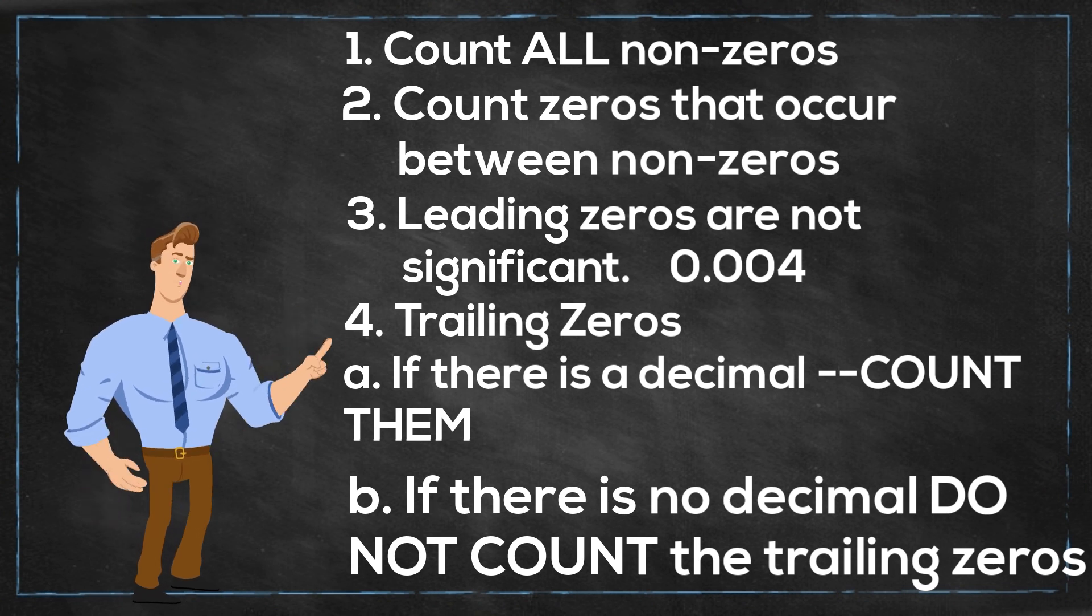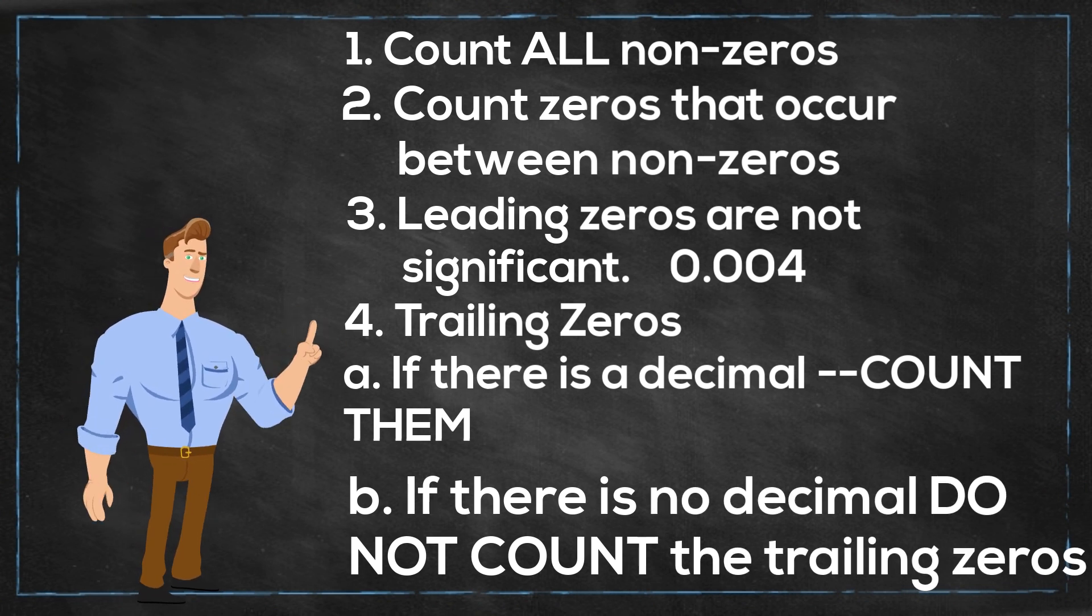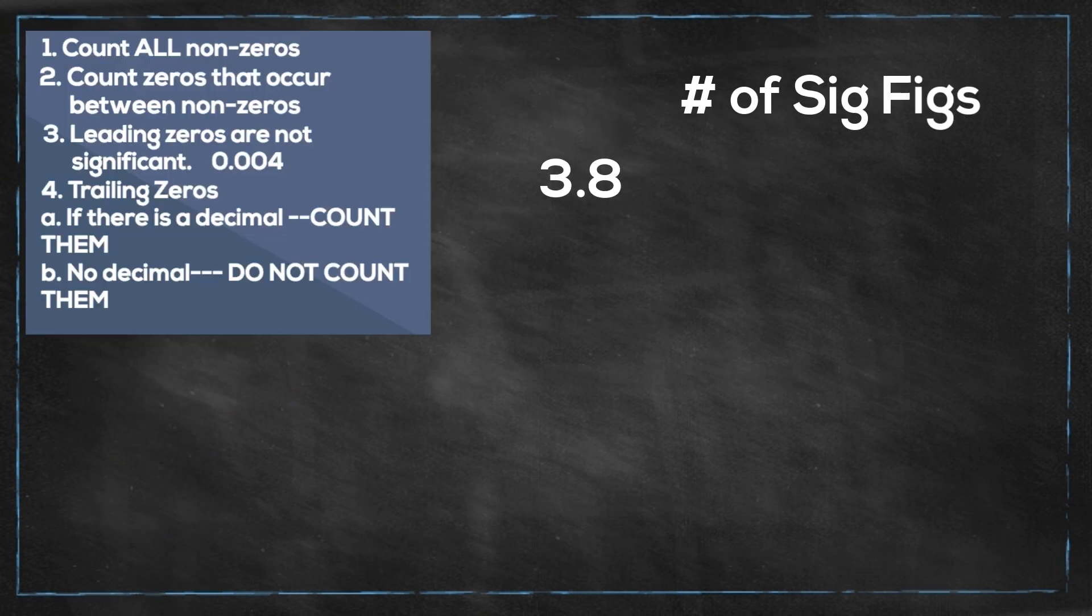Okay, so now let's look at a couple examples and apply the rules. Up first is 3.8. This one is fairly straightforward. You have two non-zeros, so it would be two significant figures.